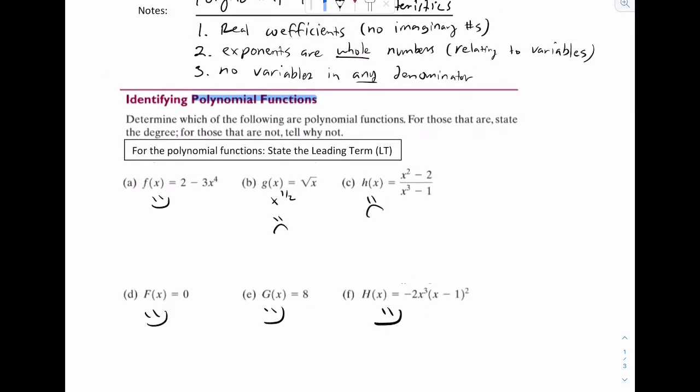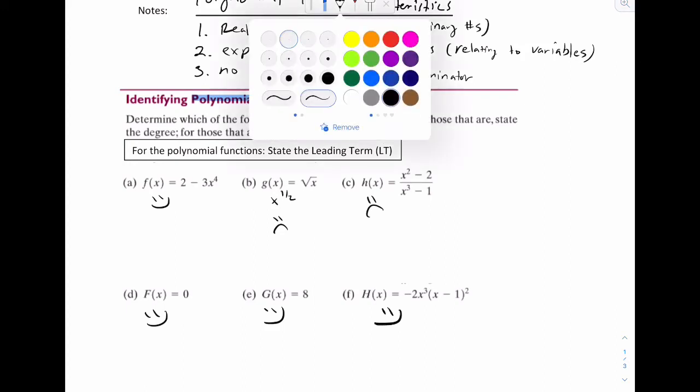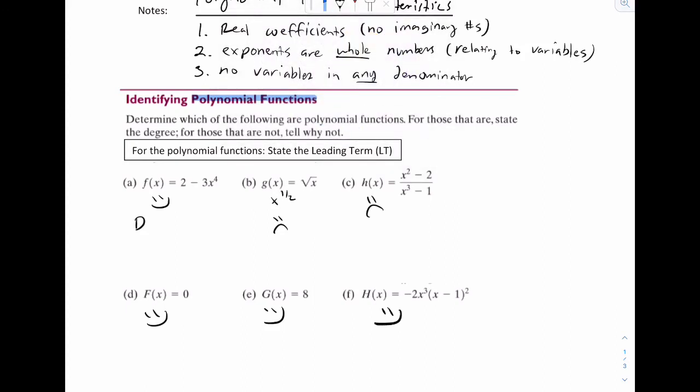Okay, now it says, for those that are, state the degree. So happy faces, we're going to put d under them for degree. So simply put, degree is the highest power of x in the expression. So that's the simplest idea to understand, or simplest way to think about it. So if you look at this thing, I see that four, that's the highest power of x. So you put degree is four.